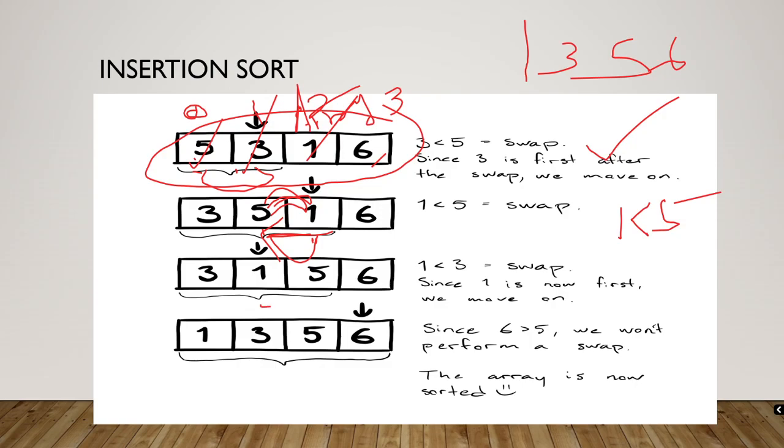Again check the next element. I am checking here 1 and 3. Is 1 less than 3? Yes, 1 is also less than 3, so I am swapping. Since 1 is now first, we move on. Since now 1 is first, we have to again see in this direction whether everything is sorted or not. Again I have to see.